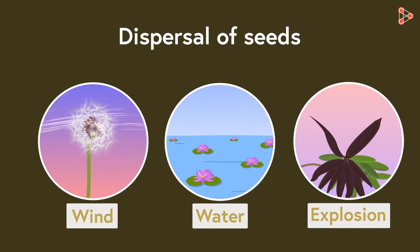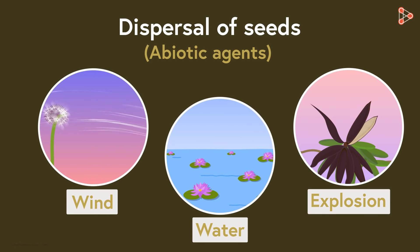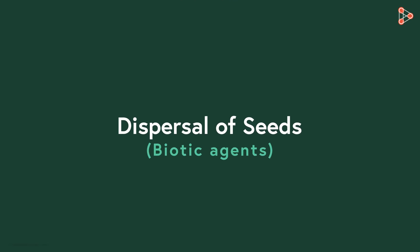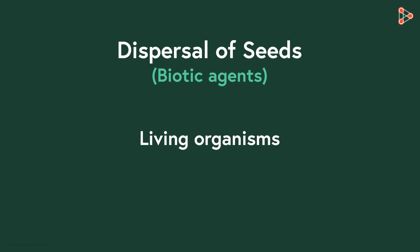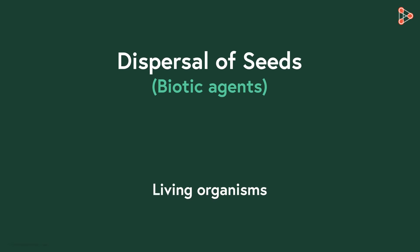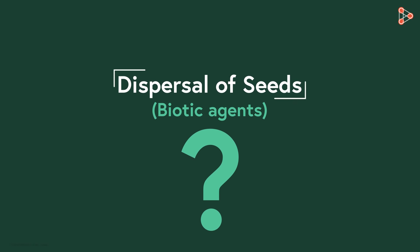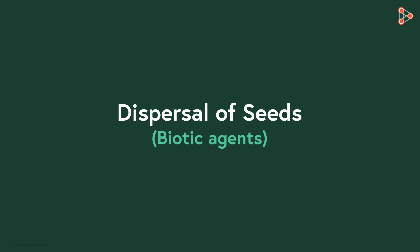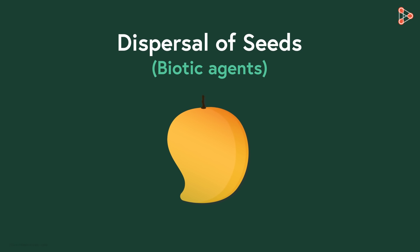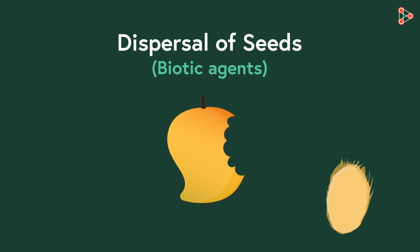Those were all the abiotic agents. Last in the list are the biotic agents — biotic means living organisms. So animals are also responsible for dispersal of seeds. What do we do with seeds after eating juicy fruits? We generally throw away the seeds. That is how seeds from a plant growing in one area reach a completely different area.